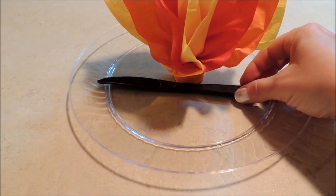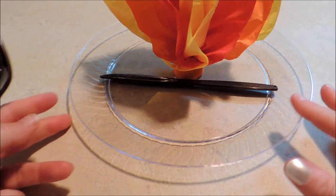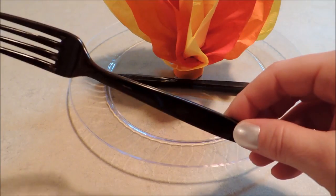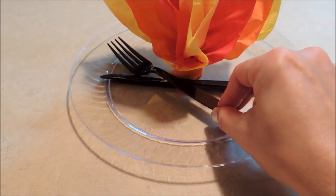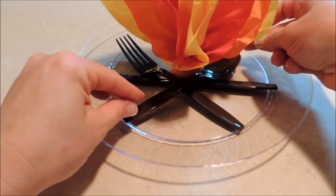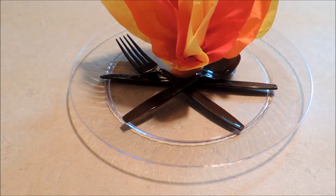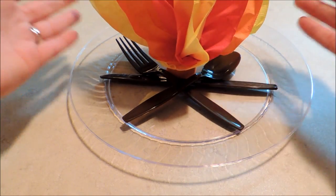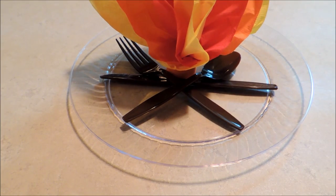Now we're just going to lay our utensils in a crisscross pattern like our fire logs would be. Starting first with our knife straight across. And then we're going to crisscross the fork and spoon. And there's your campfire napkin fold.